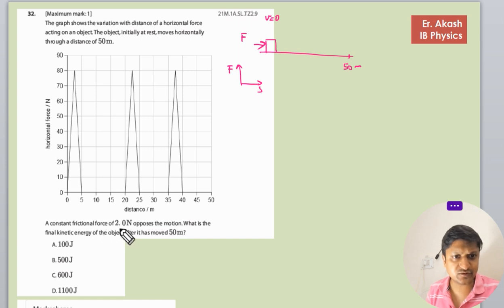A constant frictional force of 2 newtons opposes the motion. There is a frictional force also that is of 2 newtons.